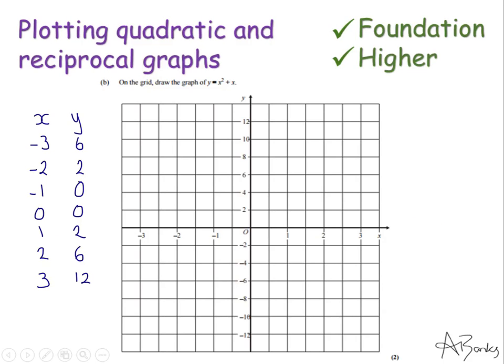So part b of the question now asks me to draw the graph for y equals x squared plus x. Now you're going to use what you've just done in part a, which is that table of values. I've just rewritten it here so I've got it to hand, but in the exam you'll be able to see it in part a. So these numbers actually give you coordinates to plot.